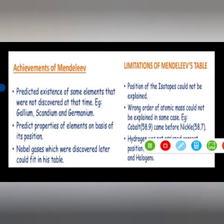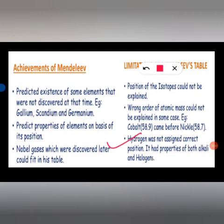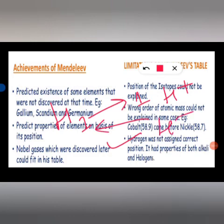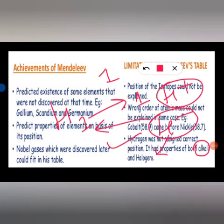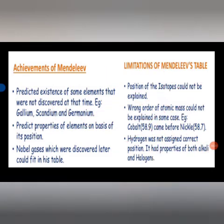Another limitation is that hydrogen was not assigned a correct position. Hydrogen has one electron — it can lose that electron to form H⁺ like alkali metals (Group 1), or gain one electron to form H⁻ like halogens (Group 17). This dual behavior made hydrogen's position controversial in Mendeleev's periodic table.